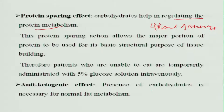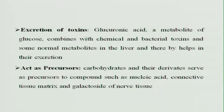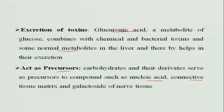Carbohydrates have an anti-ketogenic effect. The presence of carbohydrates is necessary for fat metabolism; without carbohydrates, fats are also not properly digested. Carbohydrates also aid in excretion of toxins — glucuronic acid, a metabolite of glucose, combines with chemical and bacterial toxins and some normal metabolites in the liver, thereby aiding excretion. Furthermore, carbohydrates and their derivatives act as precursors to compounds such as nucleic acids, connective tissue matrix, and galactosides of nervous tissues.